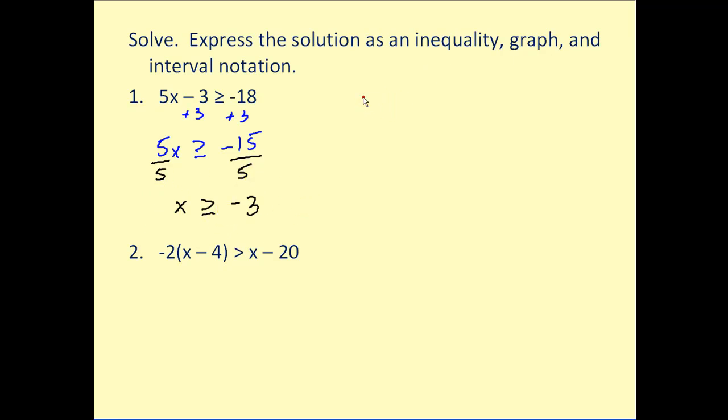Let's go ahead and graph this. X is greater than or equal to negative three. So because of this inequality symbol, it would be a closed point. And because it's greater than or equal to, we would graph to the right. Again, as we move to the right, we're approaching positive infinity. This would be our graph.